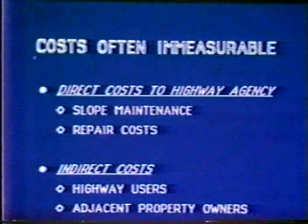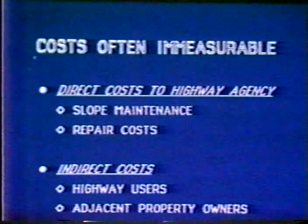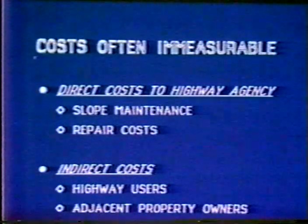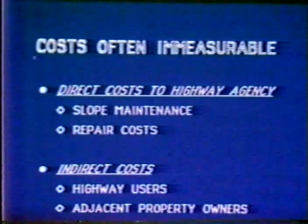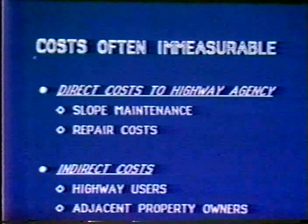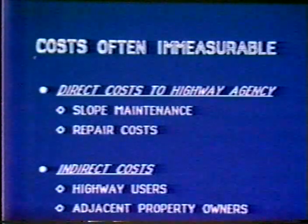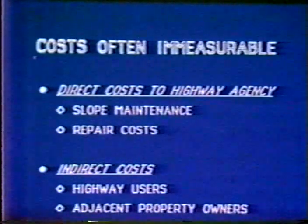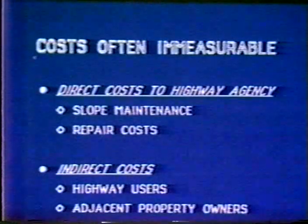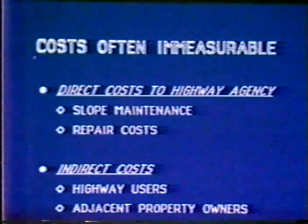There are two kinds of costs because of slides: direct costs and indirect costs. Most of the time we know that slope maintenance is costing us money, but we don't know how to use that in our budget because sometimes it's not identifiable. When we have to do design work, it becomes identified as a major slide correction.